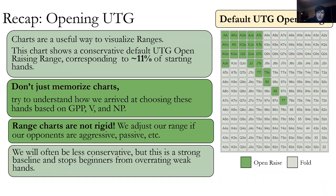Range charts aren't rigid. We like hands with implied odds, versatility, and good pair potential. Ace-jack offsuit has good pair potential and that's why we play it, whereas a hand like ten-nine suited we play because of its versatility.